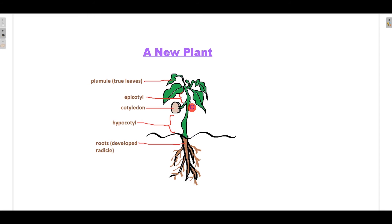Which is the base stem between the cotyledon and the radical. And this is the upper stem connecting the cotyledon and the plumule. Here the plumule has grown into true leaves. This is a new plant.